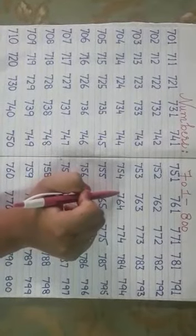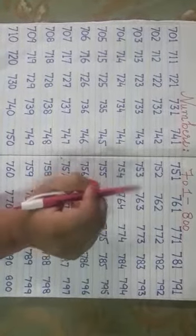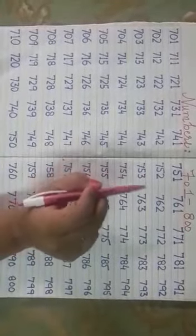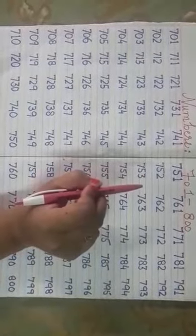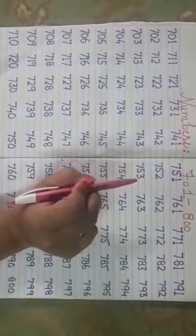And as for your homework, you will write numbers 801 to 900 in your maths fair copy.